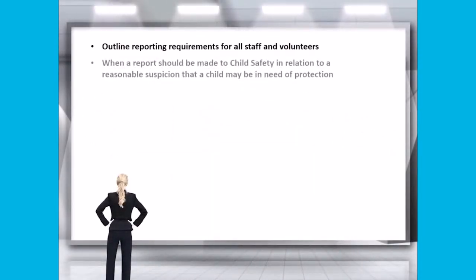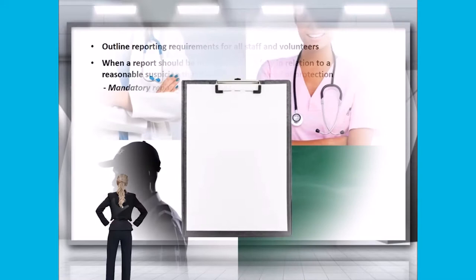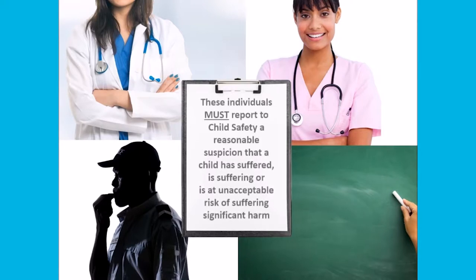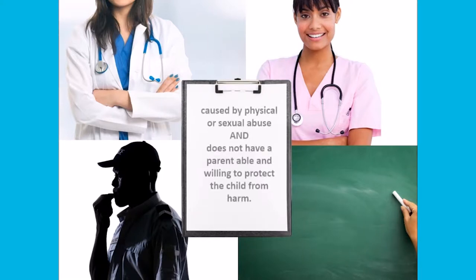You should also outline when a report should be made to child safety in relation to a reasonable suspicion that a child may be in need of protection. You should ensure that you specifically outline any mandatory reporting obligations which apply to individuals working within your organisation. People with mandatory reporting obligations include doctors, registered nurses, approved teachers employed at a school, and police officers with child protection responsibilities. These individuals must report to child safety a reasonable suspicion that a child has suffered, is suffering, or is at unacceptable risk of suffering significant harm caused by physical or sexual abuse and does not have a parent able and willing to protect the child from harm.